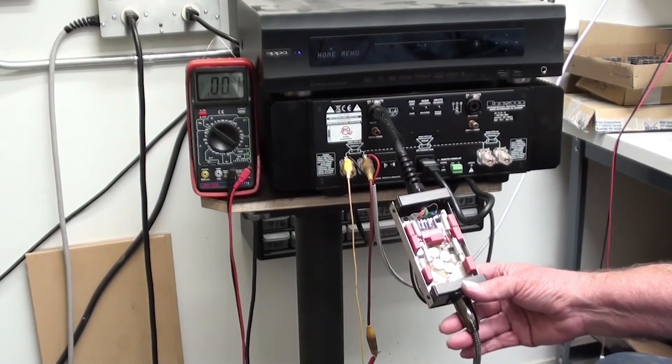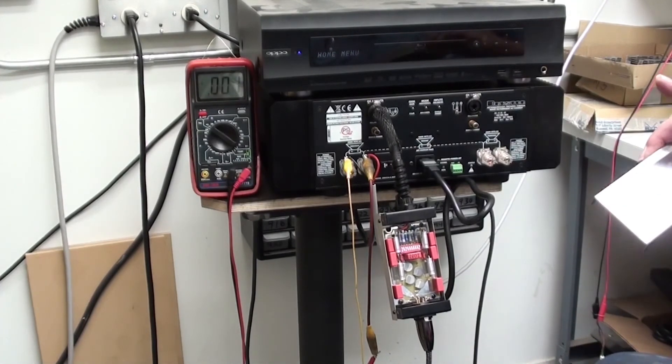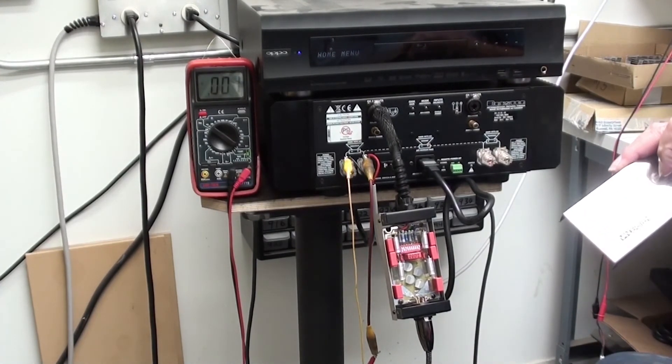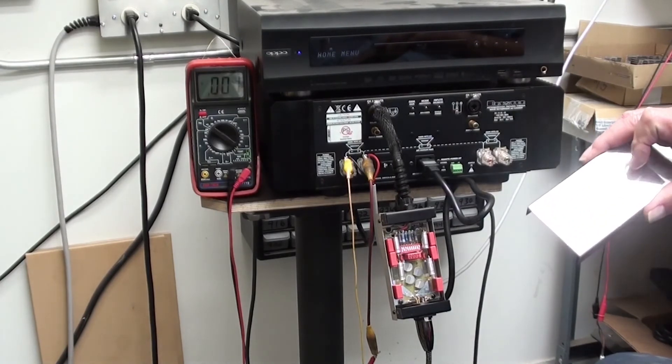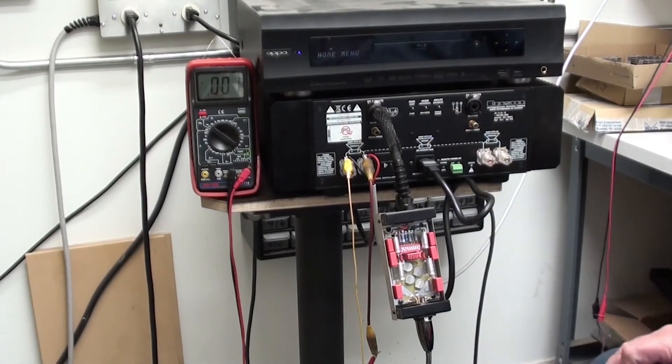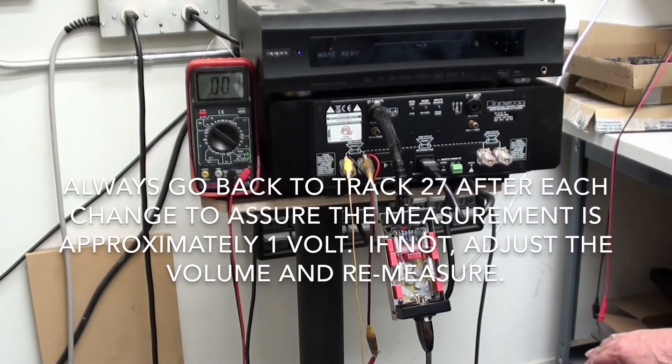Had this voltage not been near .7, we would have gone to the next setting up, which would have been 33K. And we keep working our way up the list until we get as close to .7 volts as we can. And now we know, we have it set as optimally as possible.